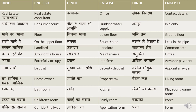Nalka means faucet or pipe. Nalke mein risav hai means there is a leak in the pipe. Usually you will call up the landlord and tell him there is a leak in the pipe or in the bathroom. Makaan malik means landlord — jamindar can also be translated as landlord. Samanya kshetra means common area — the ordinary space between two homes. Ghar ke irdgit means around the house. Rakh rakhav means maintenance. Anuchit means unfair. Jamarashi means deposit. Surakshya marashi means security deposit.